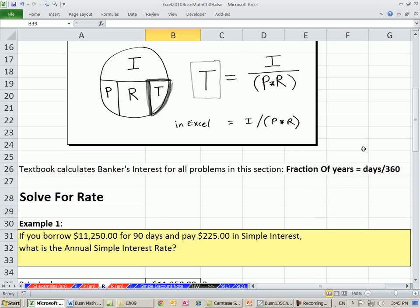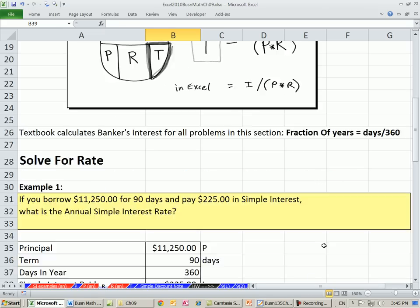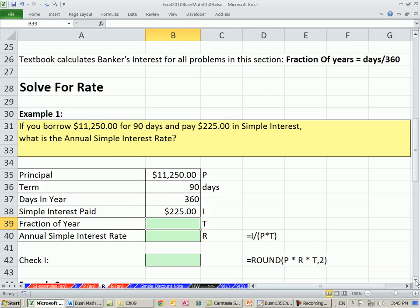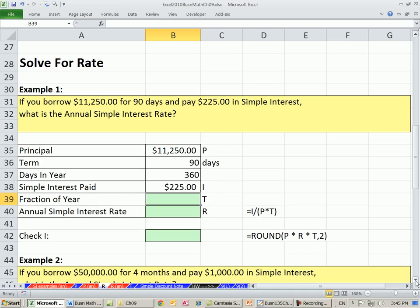And again, the textbook is using 360 for most of the problems. Only when it says otherwise will they use 365 or something else. Solve for rate, that's what we're doing here. So here's our first example.